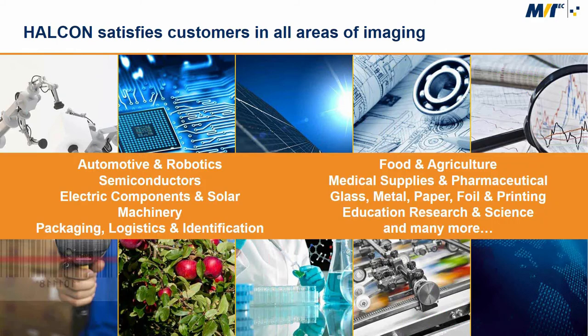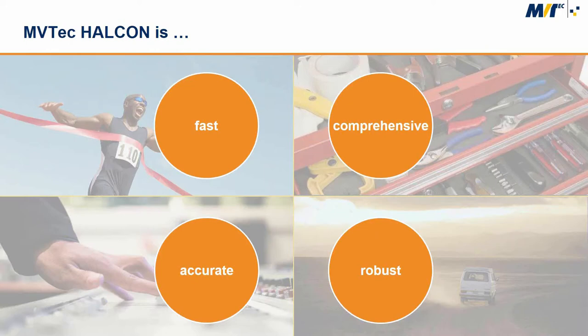For 20 years HALCON has been used in nearly all industrial areas as a multi-purpose technology. Machine vision is not restricted to specific branches — in modern Industry 4.0 production scenarios, almost every company can benefit from it for cost reduction and process optimization. The key features of HALCON are: it is fast, comprehensive, accurate, and very robust.